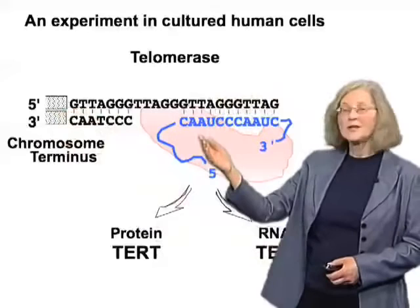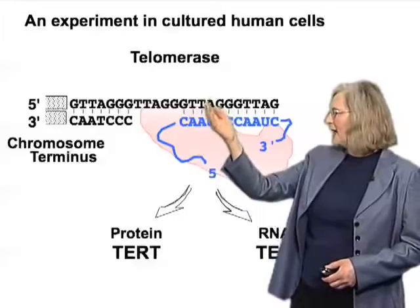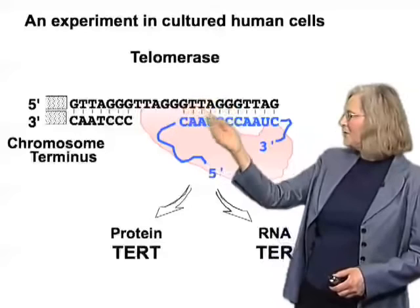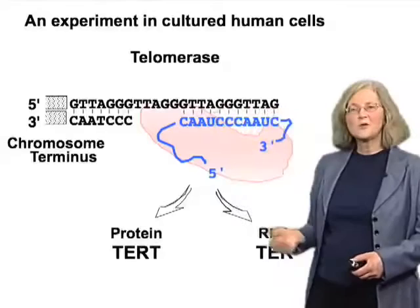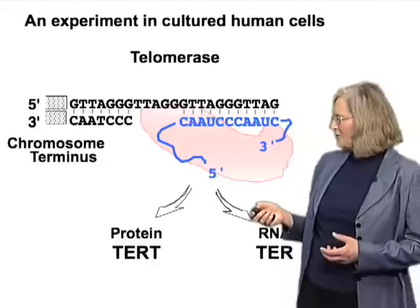Just as I showed you for Tetrahymena telomerase, the template region is copied, so a DNA ending with 3 Gs, T2s, and an A would sit down on the template, and then nucleotides would be added extending along the template, thereby lengthening the DNA in this reverse transcriptase reaction that telomerase carries out.